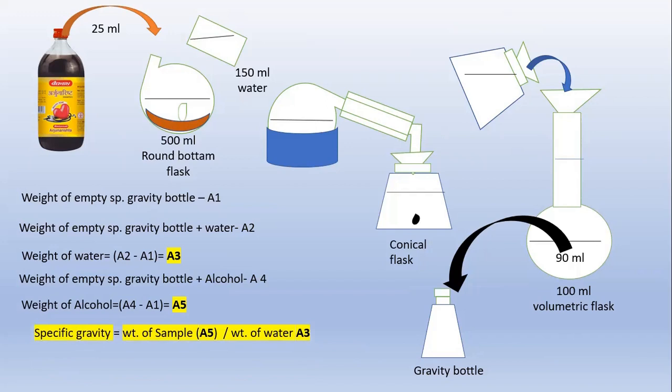In this way you get A3 (weight of water) and A5 (weight of alcohol). For the specific gravity, divide the sample weight by the water weight — that is A5 divided by A3. This gives you the weight per ml of the given sample. The result in grams tells you how much alcohol is present in your sample.